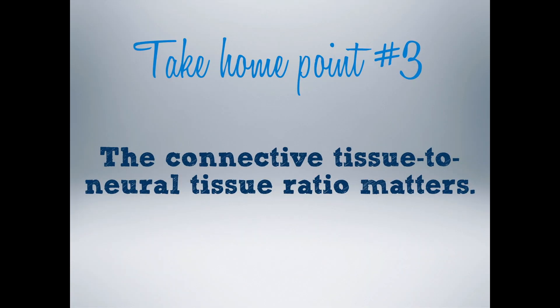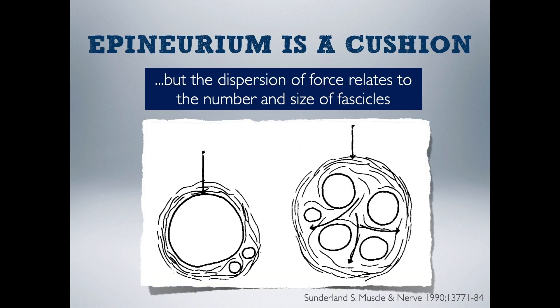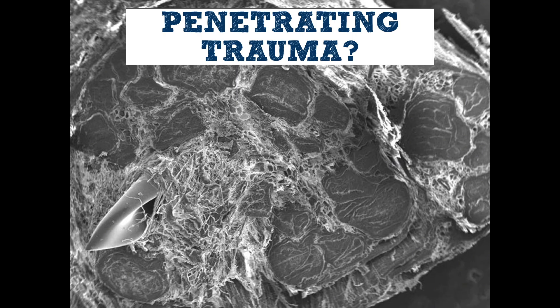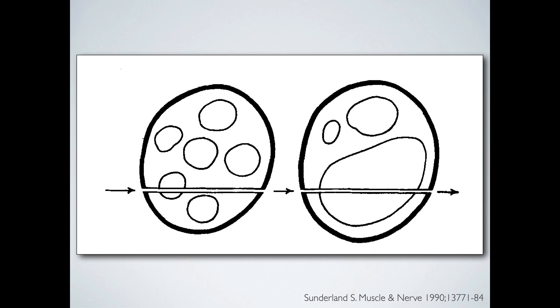Number three: that ratio of connective tissue to neural tissue matters. The epineurium is a cushion and serves to distribute blunt mechanical force around the fascicles, protecting them. This effect is related to the number and size of fascicles — on the left, that huge single fascicle is going to suffer the brunt of the force, whereas on the right, the epineurium acts much more like a shock absorber. It is hard to say if that principle holds true for penetrating trauma, but it might be that the higher the proportion of epineurium, the fewer axons that might get speared.